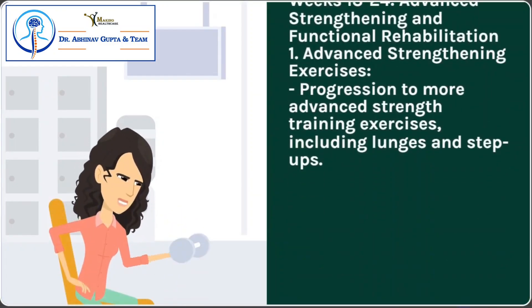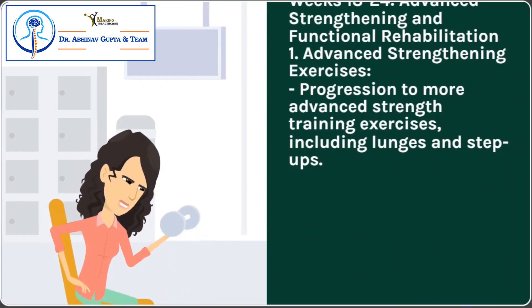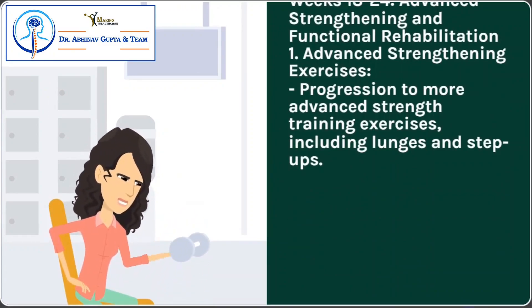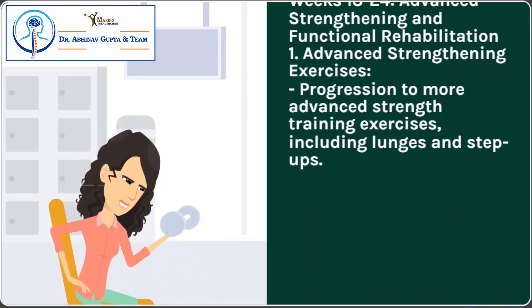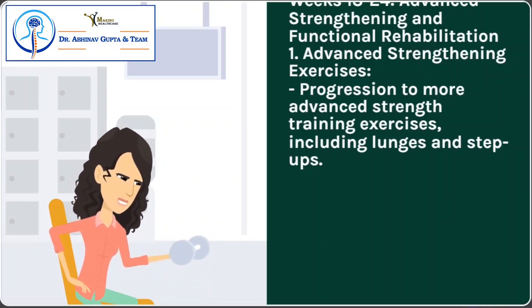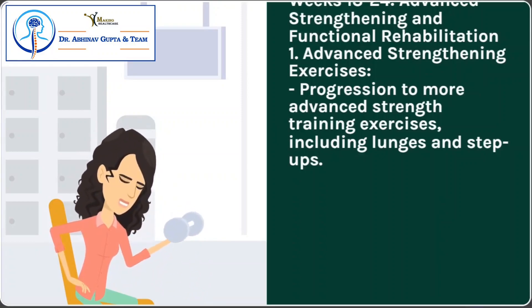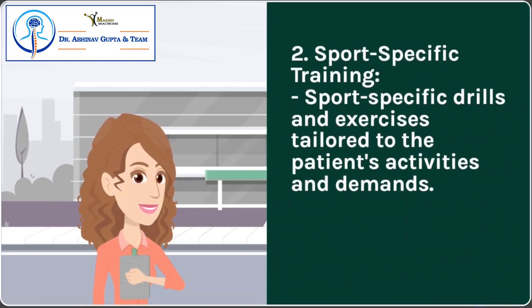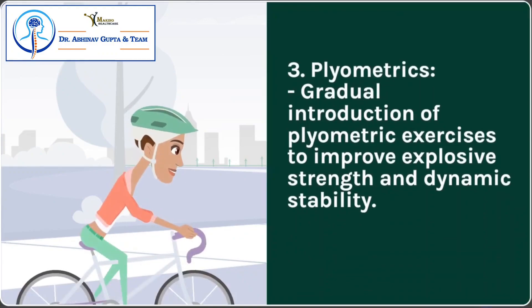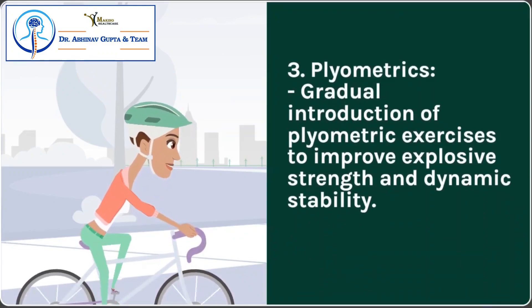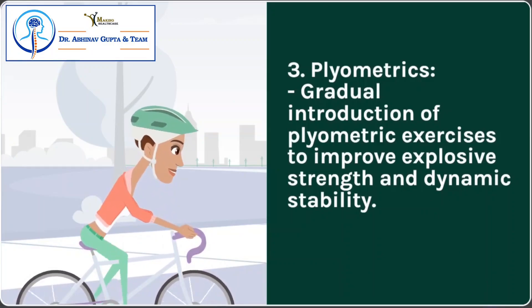Weeks 13 to 24 – Advanced Strengthening and Functional Rehabilitation: 1. Advanced strengthening exercises – progression to more advanced strength training exercises, including lunges and step-ups. 2. Sports-specific training – sport-specific drills and exercises tailored to the patient's activities and demands. 3. Plyometrics – gradual introduction of plyometric exercises to improve explosive strength and dynamic stability.